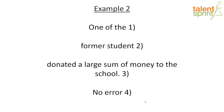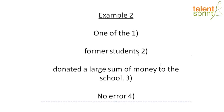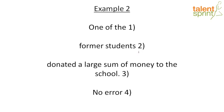Let's move to our second example: 'One of the former students donated a large sum of money to the school.' Same principle — one of the former students. The error is in part two; you just have to add an 'S' after 'student,' because one of, each of, sum of are always followed by plural subjects. The error is in part two.